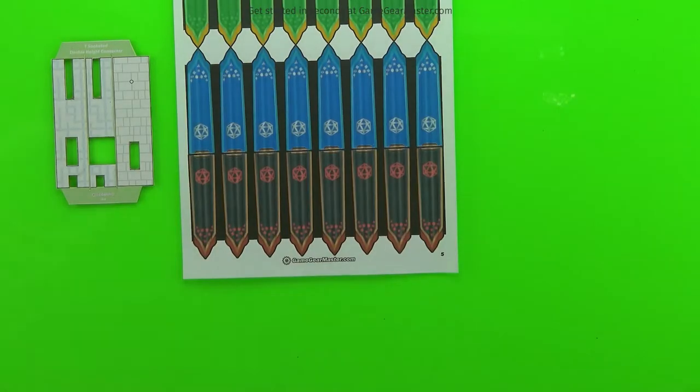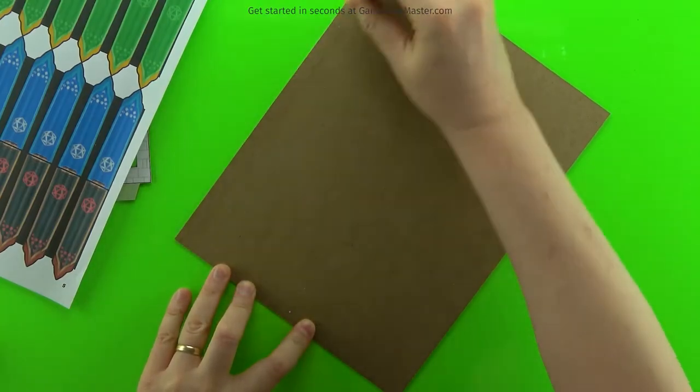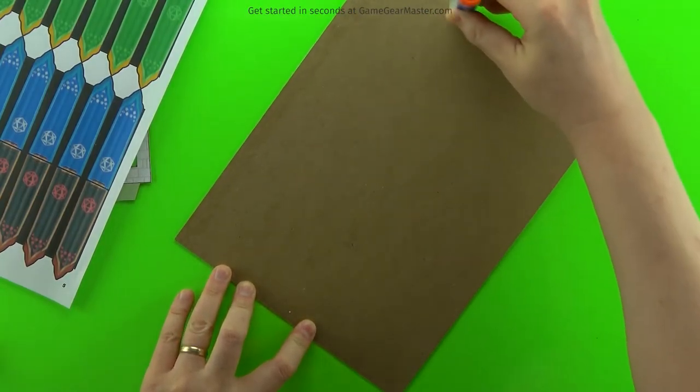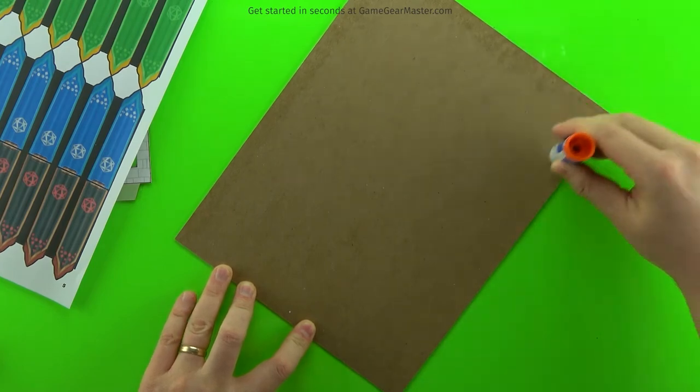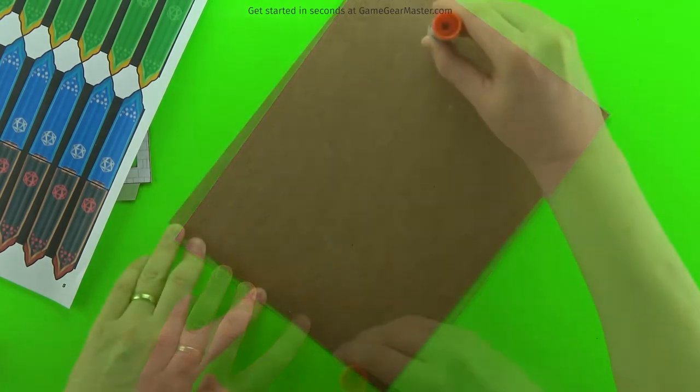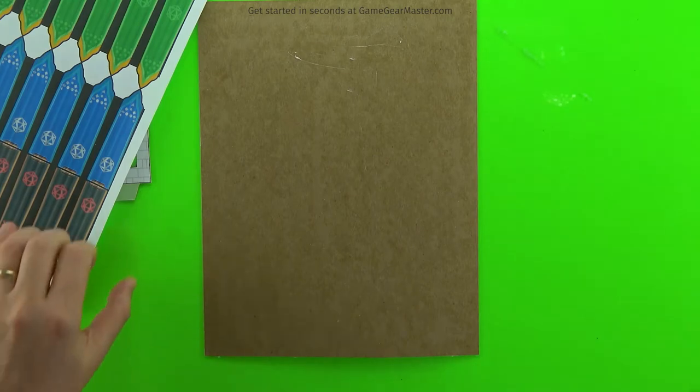So you're going to need at least one printout of the flags from the Terraino tech and torches printable textures file. And here I'm doing the double height banners or flags and just need to glue them onto some cardboard.